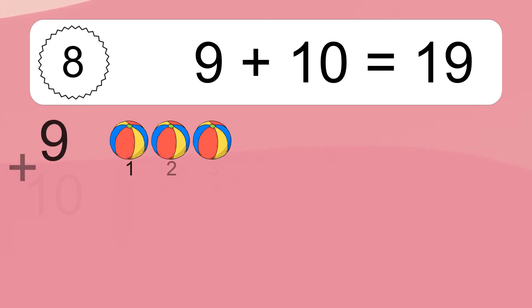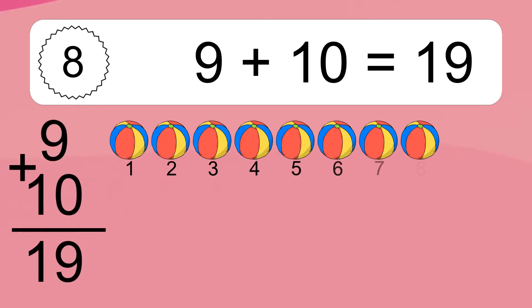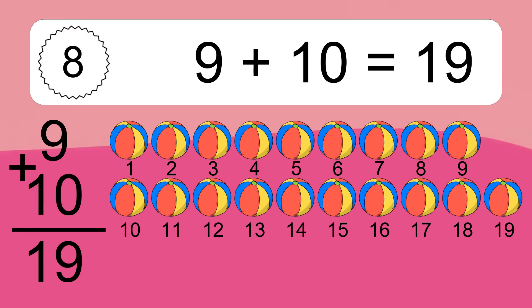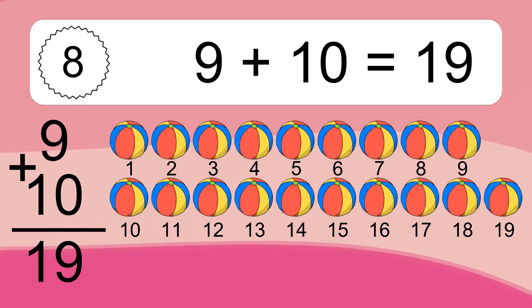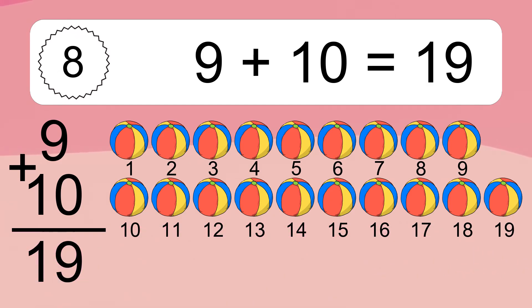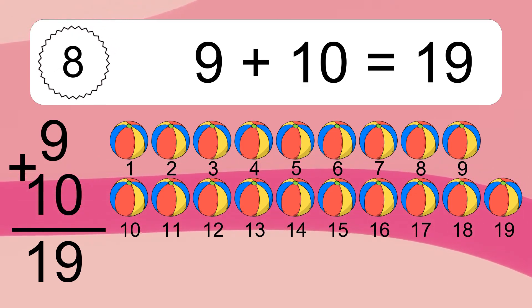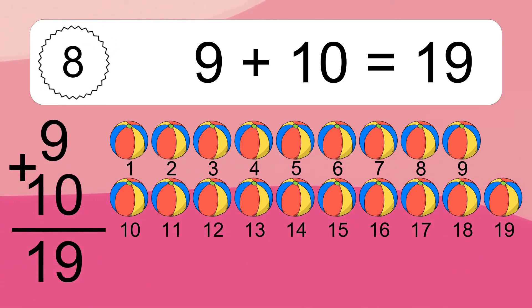9 plus 10 equals 19. Let's count it. 1, 2, 3, 4, 5, 6, 7, 8, 9, 10, 11, 12, 13, 14, 15, 16, 17, 18, 19.